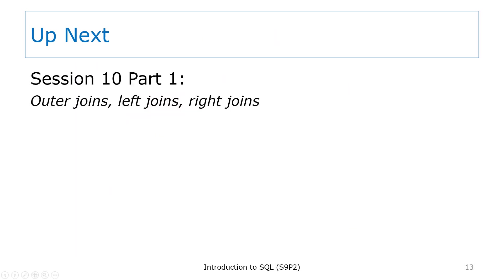In the next session, we'll look at the other types of commonly used joins. Those include outer joins, left joins, and right joins.